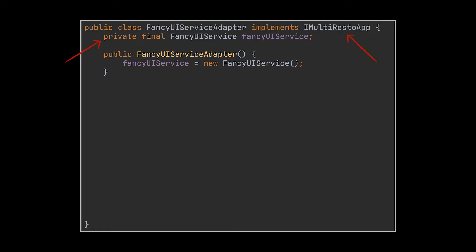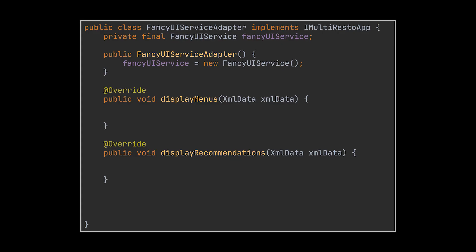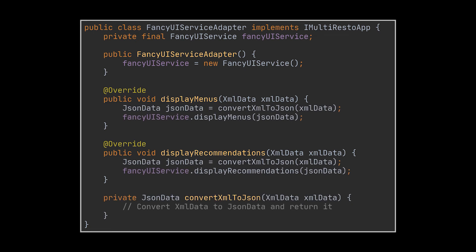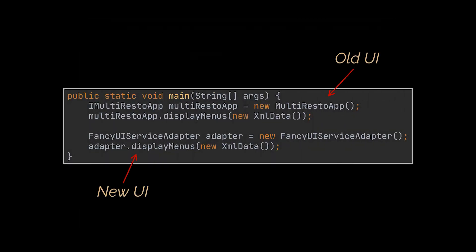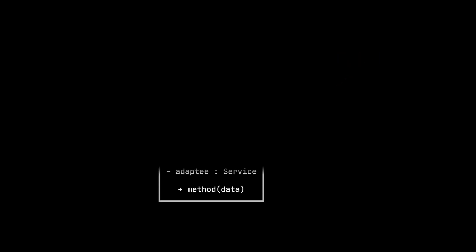To do that, the adapter class we create will use both inheritance and composition principles — by extending one of the objects and wrapping the second. Usually the object extended is the interface of our app, and the naming convention used for the adapter goes by the name of the wrapped object. Because we implemented the interface of our app, this allows us to easily interchange both implementations. Inside the adapter's implementation, we convert the XML data received as input to the JSON data the third-party UI service expects, allowing us to call its respective methods. When you want to make use of this fancy library, all you have to do is treat it as if you were manipulating your original multi-resto app class, and the adapter will take care of the rest.